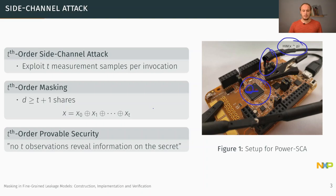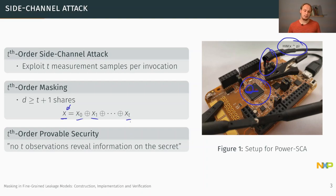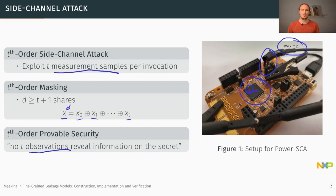For a t-order side channel attack which exploits t measurement samples, there is also t-order masking, which works by splitting the sensitive value x into multiple shares x0, x1, ..., xt. There is provable security in the sense that in the probing model, no t observations can reveal the secret. In our work, we narrow the gap between these measurement samples and probing observations by working in very fine-grained expressive leakage models.